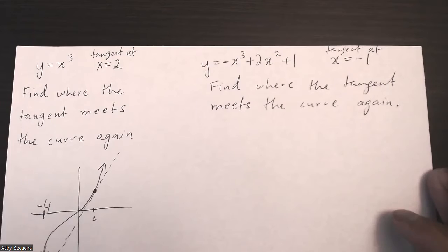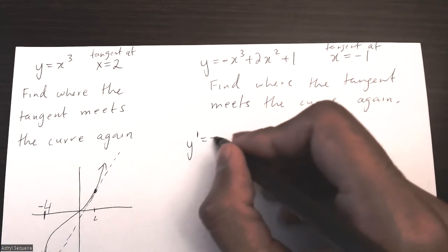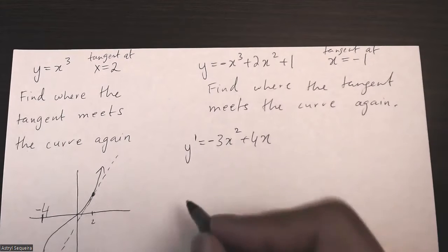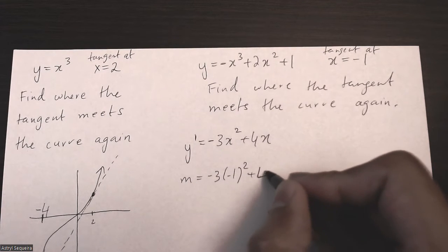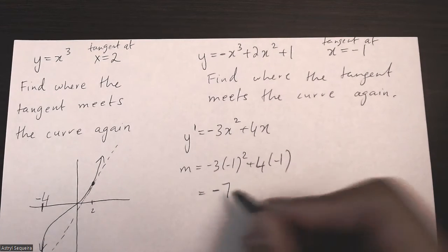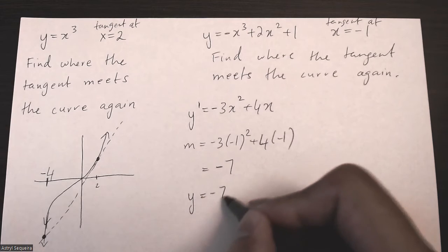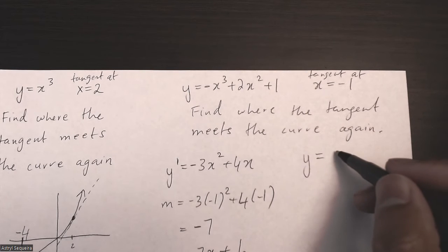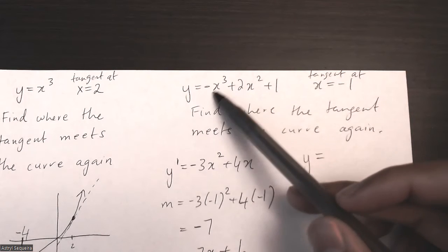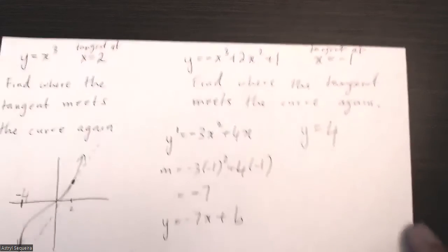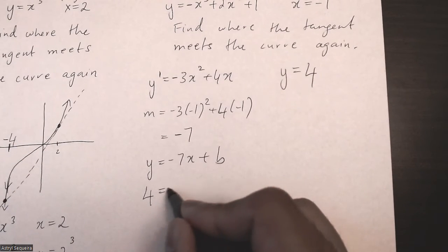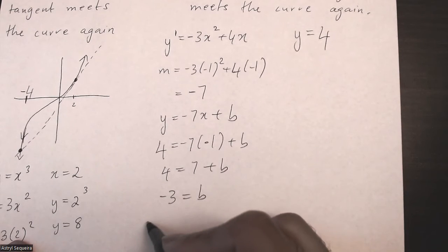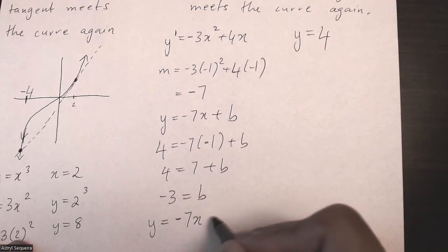Now let's try the second example — same idea, just extra practice. I start by deriving the equation, which gives negative 3x squared plus 4x, then substitute in x equals negative 1 to find the slope, which is negative 7. The tangent line equation is y equals negative 7x plus b. Substituting x equals negative 1 into the original gives y equals 4, so solving for b gives the tangent line y equals negative 7x minus 3.